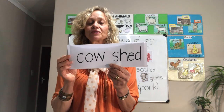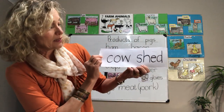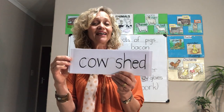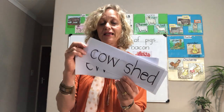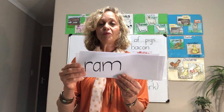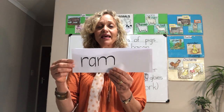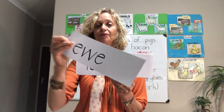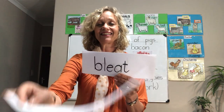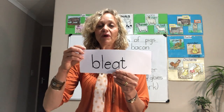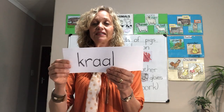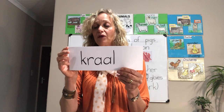We also see the cow shed or a barn — that's where they overnight, although they go out to graze during the day. Now we're back to the sheep family. The ram is the daddy, the ewe is the mum, and the lamb is the baby. A sheep bleats, and they live in a kraal, a sheep's pen, or a barn.